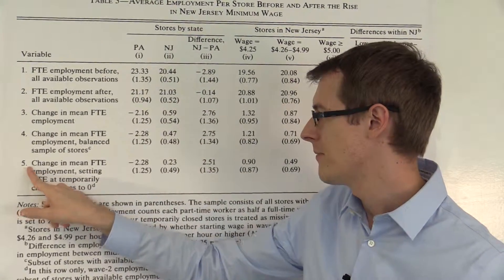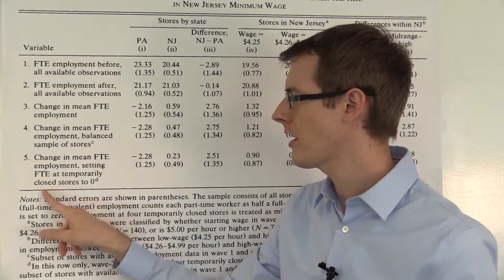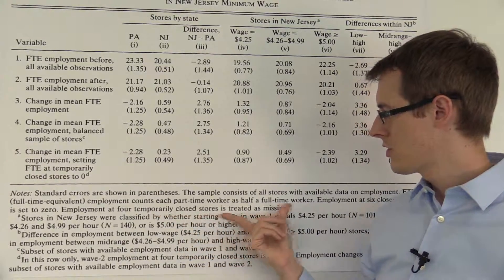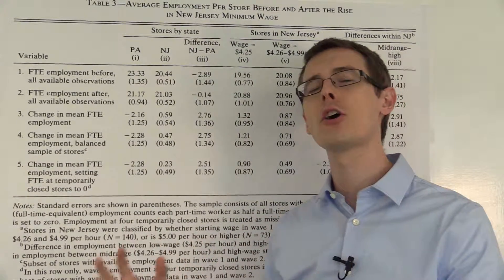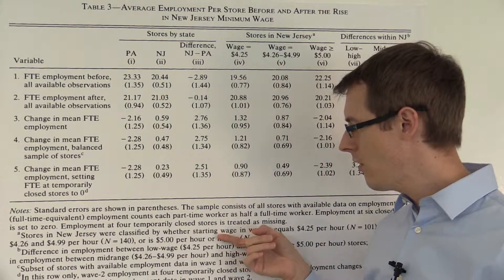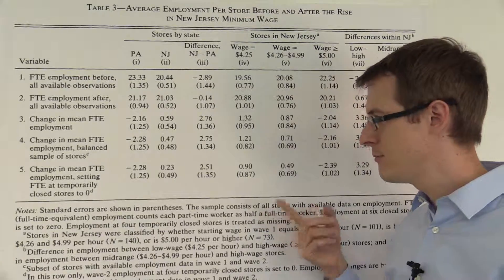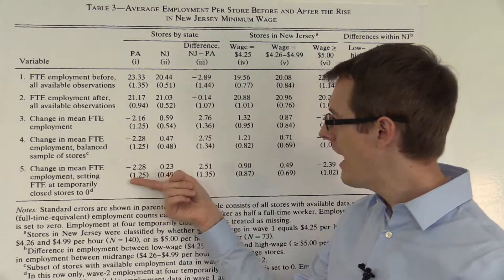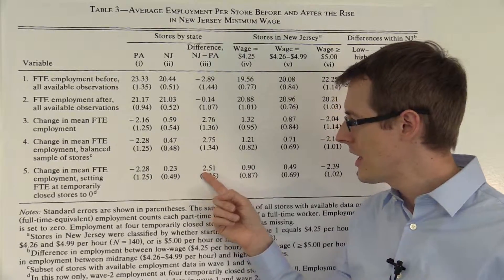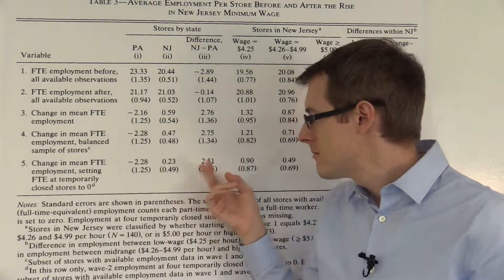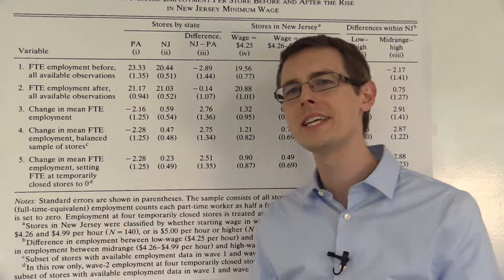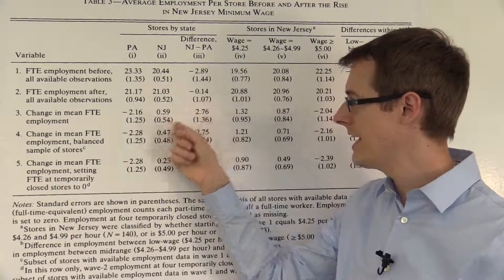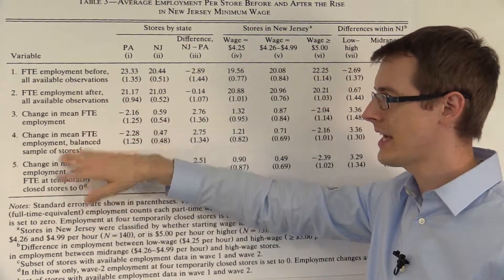Now let's go to row five: change in mean FTE employment, setting FTE at temporarily closed stores to zero. Earlier the footnote said employment at four temporarily closed stores is treated as missing — not included in our average. Now we're going to do something different: include those stores and set employment to zero. If we do that, our difference-in-difference estimate changes slightly down to 2.51, but it's pretty similar. Our qualitative conclusion doesn't change, so this is another robustness check showing our main estimate holds up.